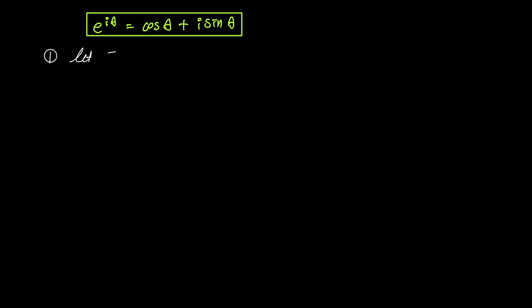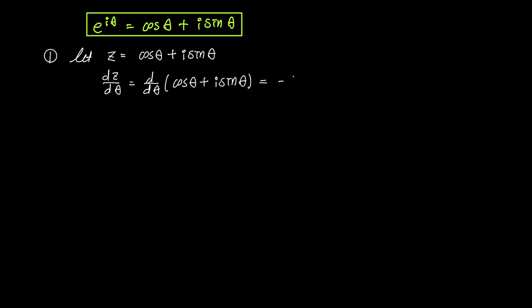If we denote the right side of the formula as z, then z equals cosine theta plus i sine theta. Now let's differentiate both sides with respect to theta. The result is dz over d theta equals the derivative of cosine theta plus i sine theta, which simplifies to minus sine theta plus i cosine theta. By arranging these terms, we get i cosine theta minus sine theta.